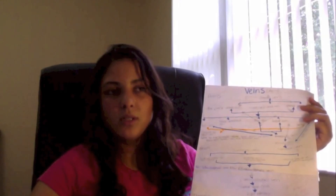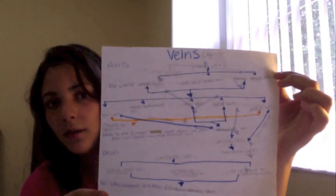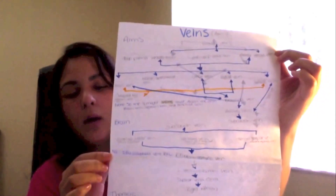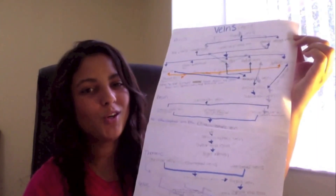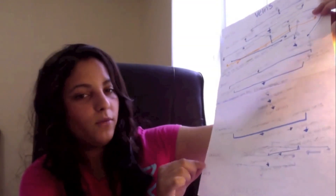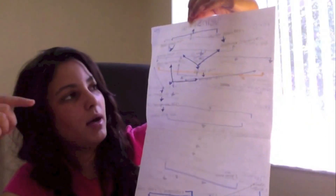Every teacher might be different, so they're going to want you to know different things — some may want just very basic veins and not go into detail. It just depends on your teacher. I have brain, thoracic, pelvic, and leg sections in my flow chart. This really helped me out a lot in understanding what goes where and what drains into what.